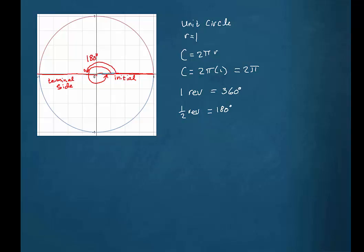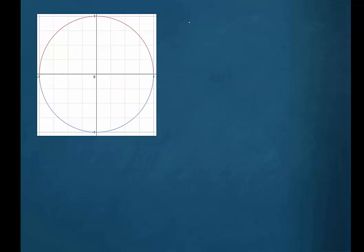So one half of a revolution is 180 degrees. If we start here again at the positive part of the x-axis and turn three quarters of a revolution, the measure of that angle would be 270 degrees. And of course, one quarter of a revolution would be 90 degrees.